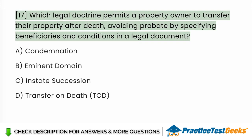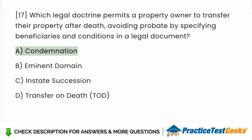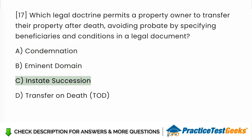Which legal doctrine permits a property owner to transfer their property after death, avoiding probate by specifying beneficiaries and conditions in a legal document? a. Condemnation. b. Eminent domain. c. Intestate succession. d. Transfer on death.